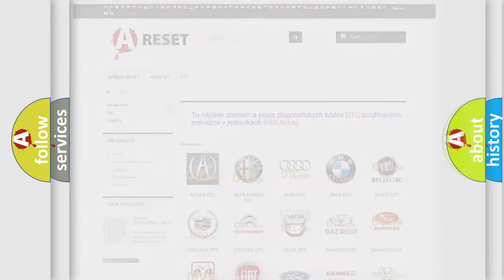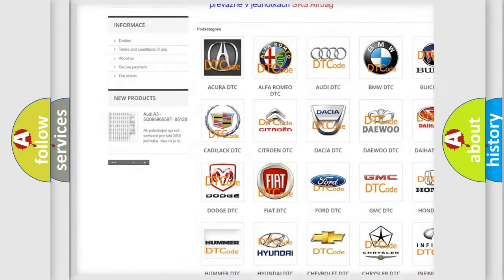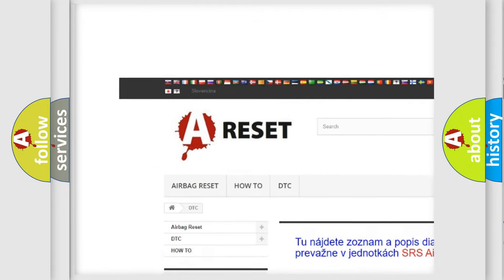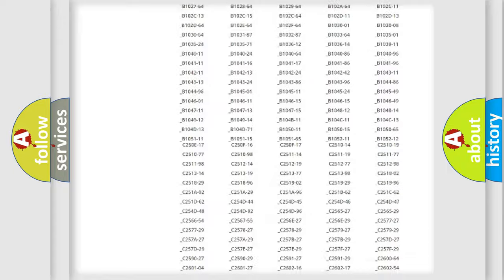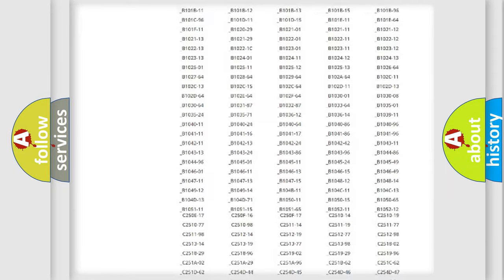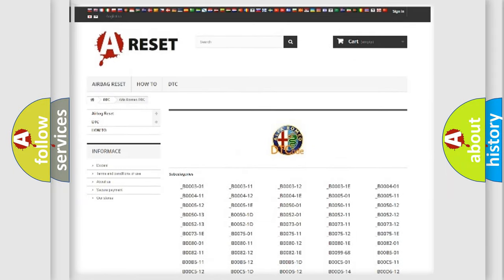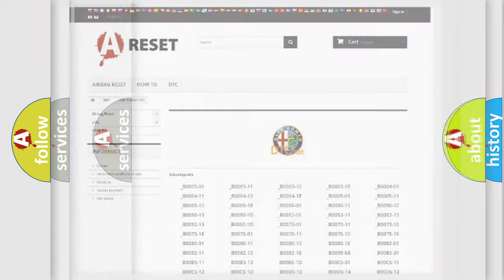Our website airbagreset.sk produces useful videos for you. You do not have to go through the OBD2 protocol anymore to know how to troubleshoot any car breakdown. You will find all the diagnostic codes that can be diagnosed in Alfa Romeo vehicles.